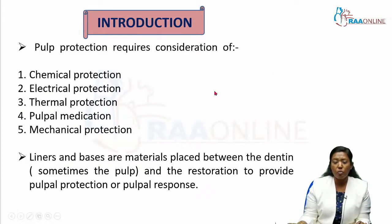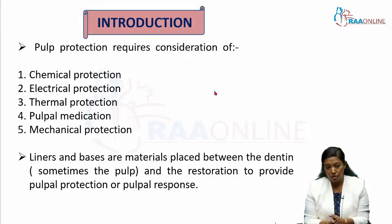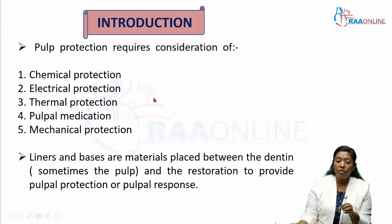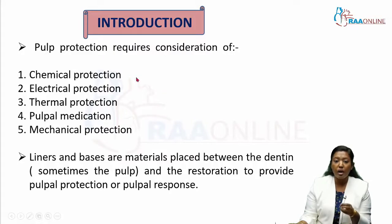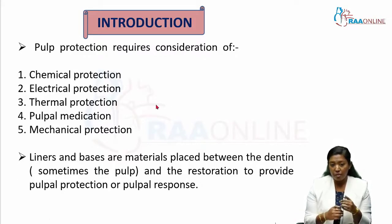Coming to the introduction: we basically have to protect the pulp. The pulp is the most important organ of the tooth. We have to protect the pulp in various ways. First is chemical protection — you have to prevent the pulp from being exposed to any chemical irritants. Next is electrical protection, in the sense of galvanic shock.